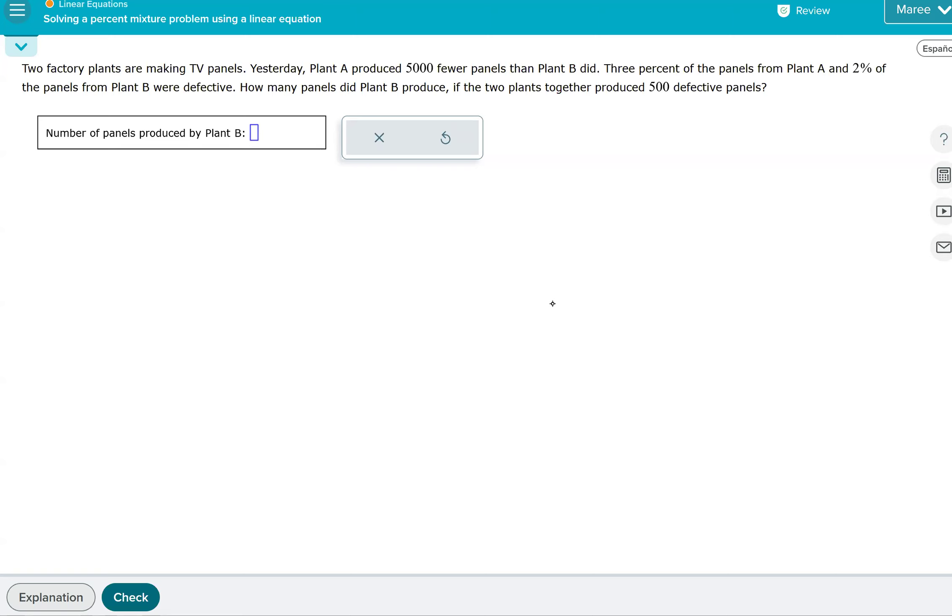So we have two factory plants making TV panels. Yesterday plant A produced 5,000 fewer panels than plant B did. 3% of the panels from plant A and 2% of the panels from plant B were defective. How many panels did plant B produce if the two plants together produced 500 defective panels?